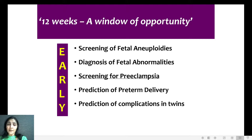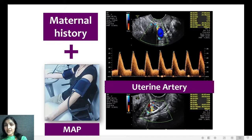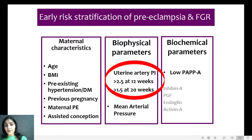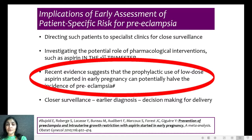Coming to the third objective: screening for preeclampsia. This is done by measuring the uterine artery in the first trimester, and as far as possible we should try to measure it transvaginally for clarity. The mean uterine artery PI is taken as a combination of the right and left uterine artery PI transvaginally. If the mean uterine artery PI is more than 2.5 at 12 weeks, it suggests a high possibility of preeclampsia or uteroplacental insufficiency in future. Starting 150 mg aspirin at bedtime can reduce the incidence of preeclampsia by half, simply by doing uterine artery Doppler screening at this stage.